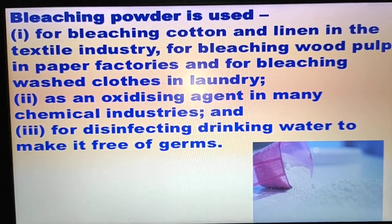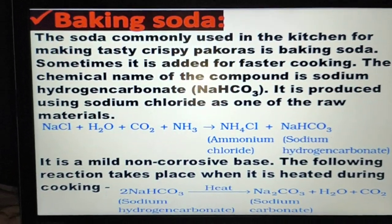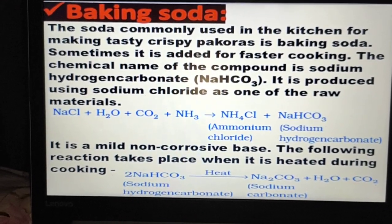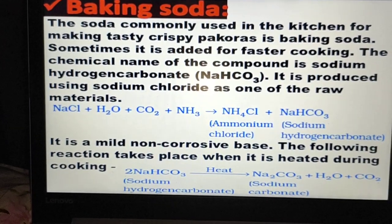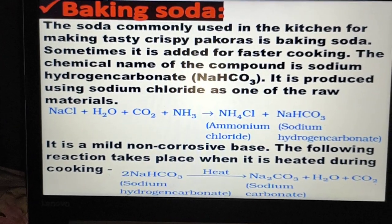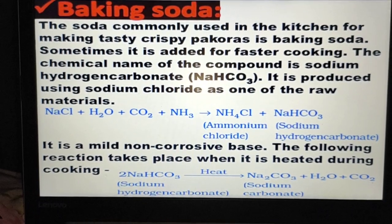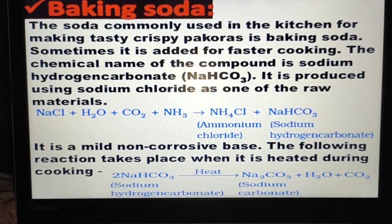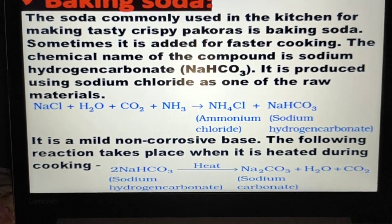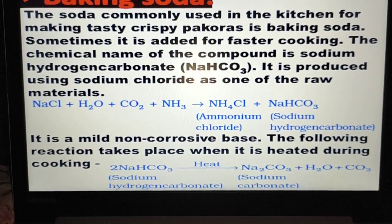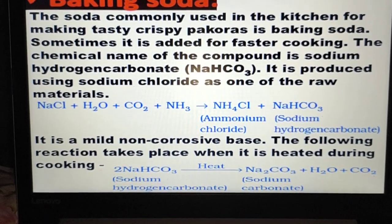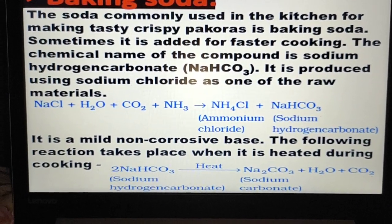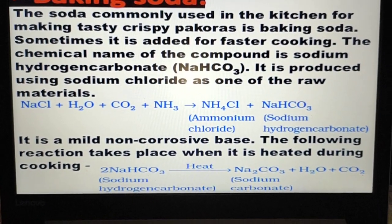Baking soda is commonly used in the kitchen for making crispy pakoras and for faster cooking. The chemical name is sodium hydrogen carbonate, NaHCO₃. It is produced using sodium chloride as one of the raw materials: NaCl + H₂O + CO₂ + NH₃ → NH₄Cl (ammonium chloride) + NaHCO₃ (sodium hydrogen carbonate).